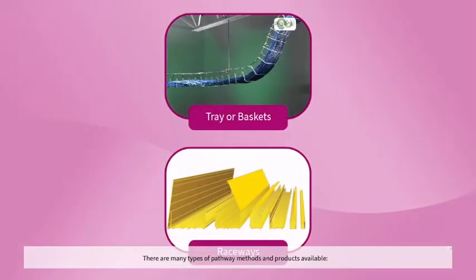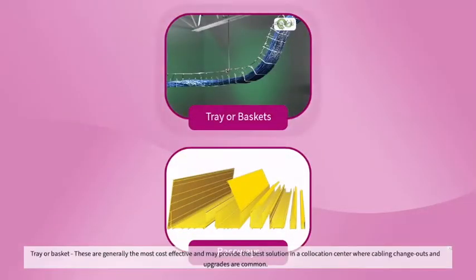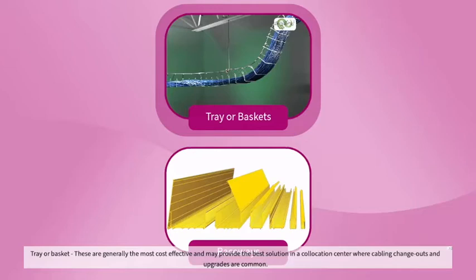There are many types of pathway methods and products available. Tray or basket systems are generally the most cost-effective and may provide the best solution in a co-location center where cabling change-outs and upgrades are common.